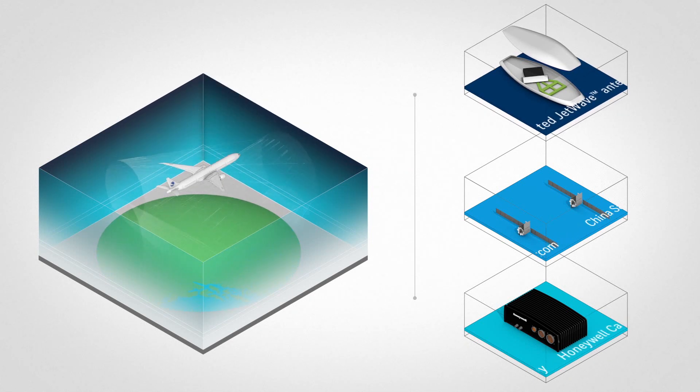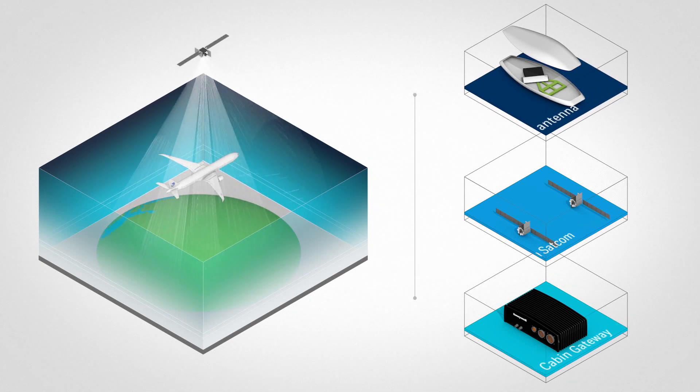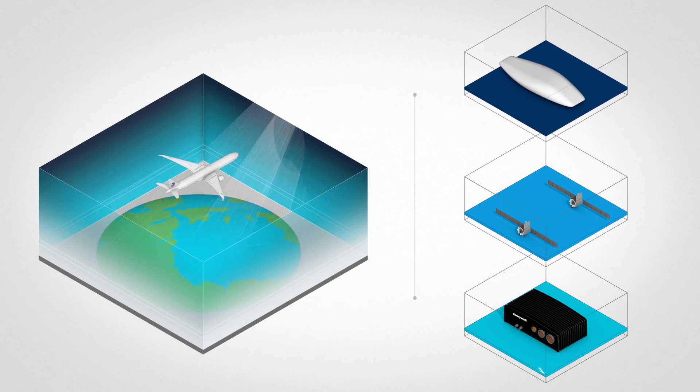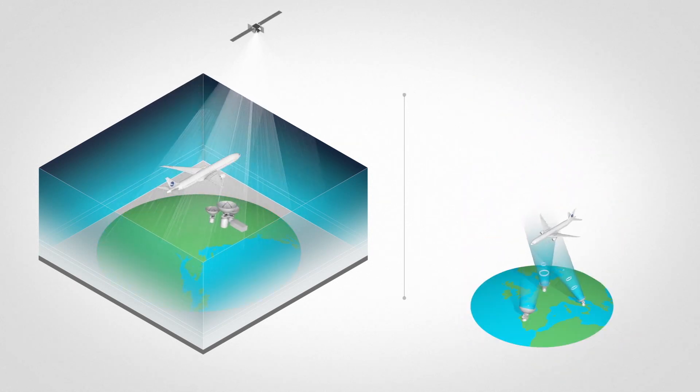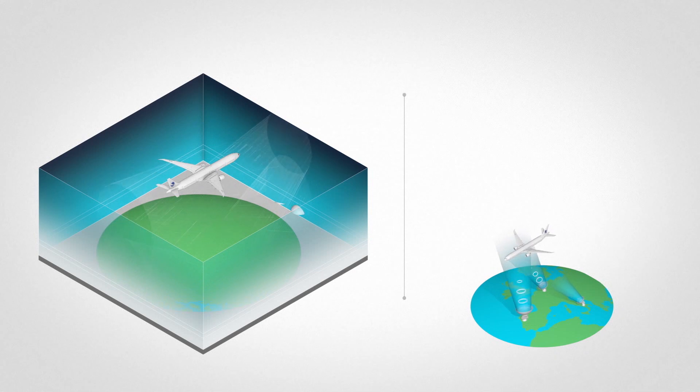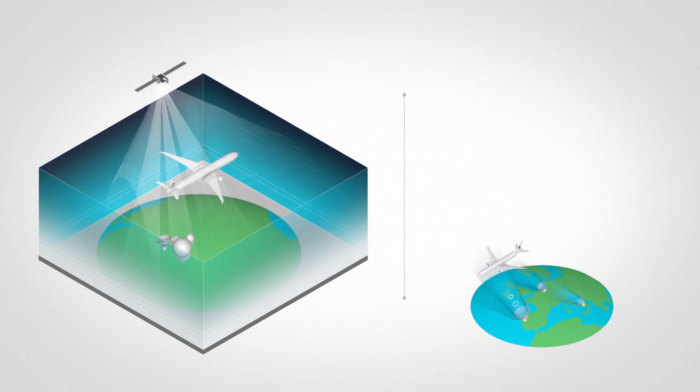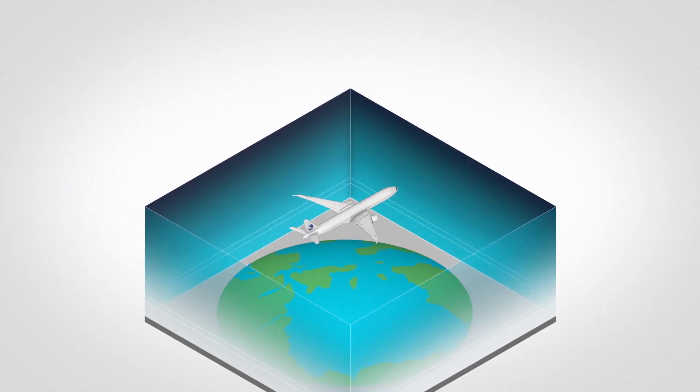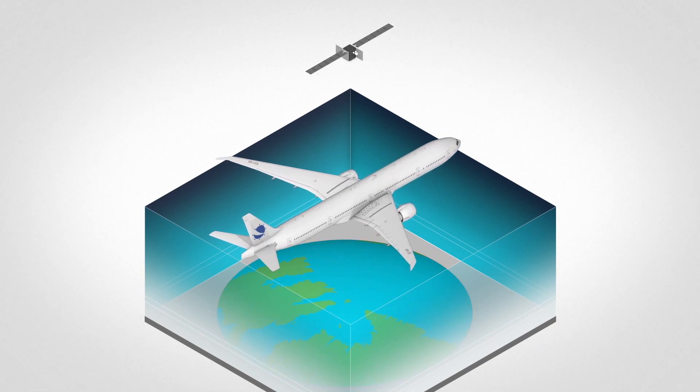JetWave uses a fuselage mounted antenna system MCS 8420, providing seamless coverage with maximum data rates exceeding up to 120 megabits per second, resulting in constant, uninterrupted passenger connectivity during all domestic flights in China.